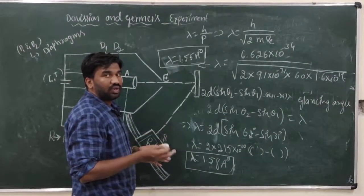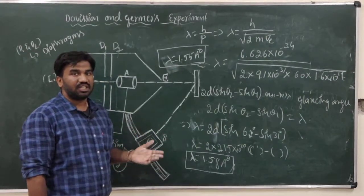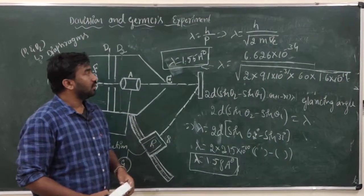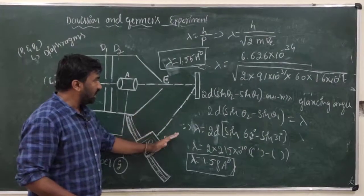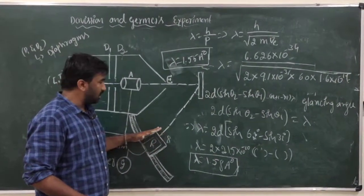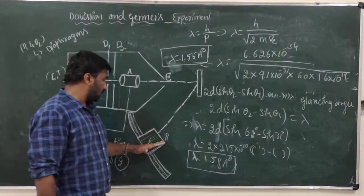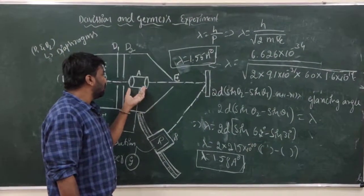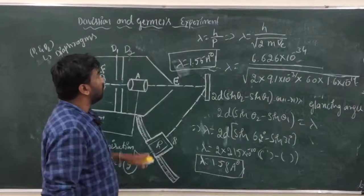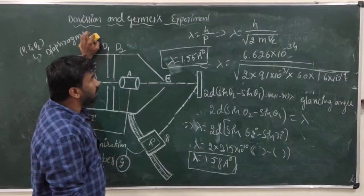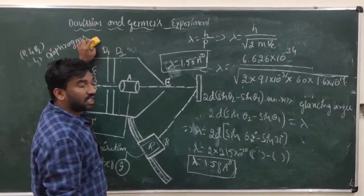We can easily conclude that electrons have both wave nature and particle nature. The Davisson and Germer experiment concludes that particle-like electrons also behave as waves — it has dual nature. In the oblique incidence method, we keep constant accelerating voltage and vary the detector angle. In the normal incidence method, we keep the angle fixed and vary the accelerating potential, noting the corresponding galvanometer ionization current. The final conclusion from this experiment is that it successfully demonstrates the dual nature of electrons — both wave nature and particle nature.